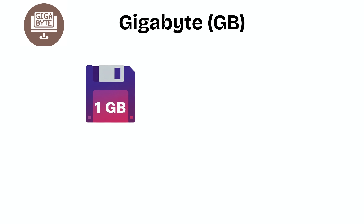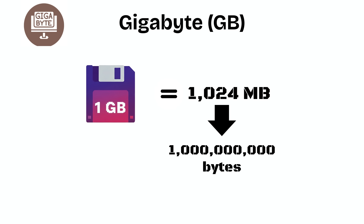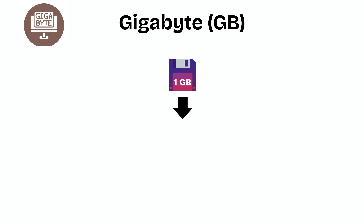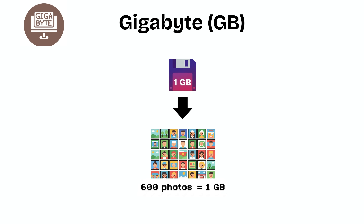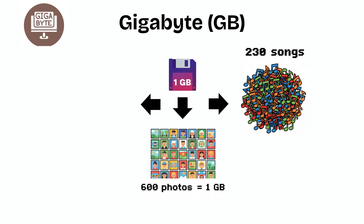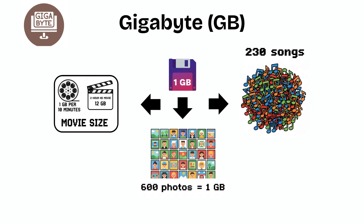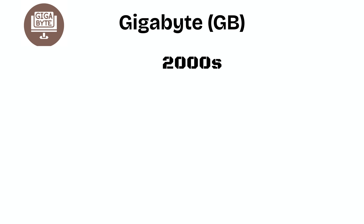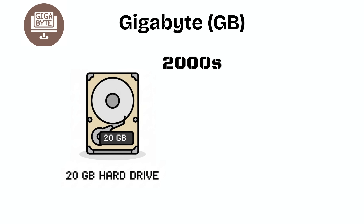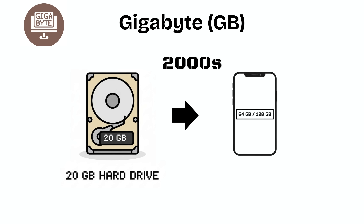Gigabyte (GB). A gigabyte equals 1024 megabytes, or roughly a billion bytes. 1 GB can store 600 photos, 230 songs, or a 2-hour HD movie. In the early 2000s, a 20 GB hard drive was considered enormous, while today most smartphones start at 64 or 128 GB.